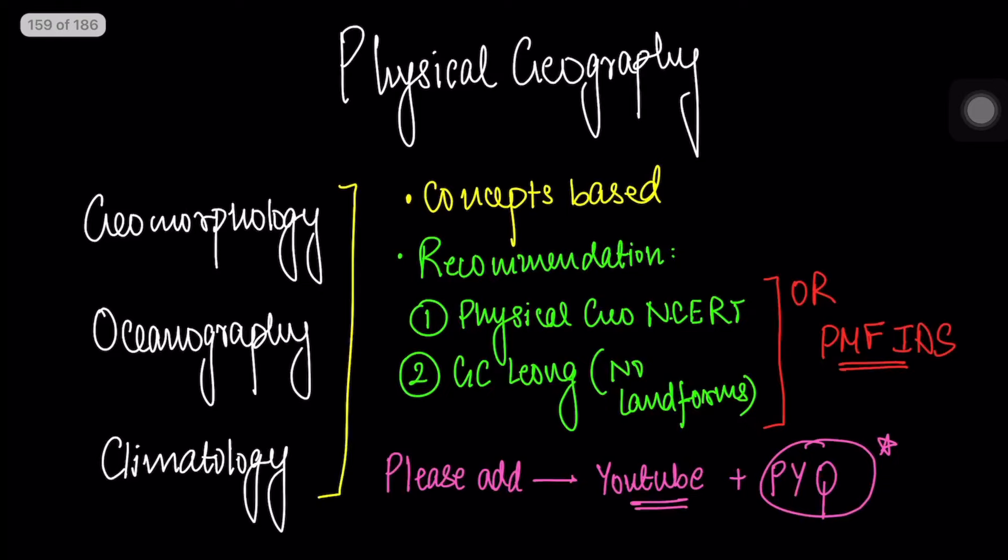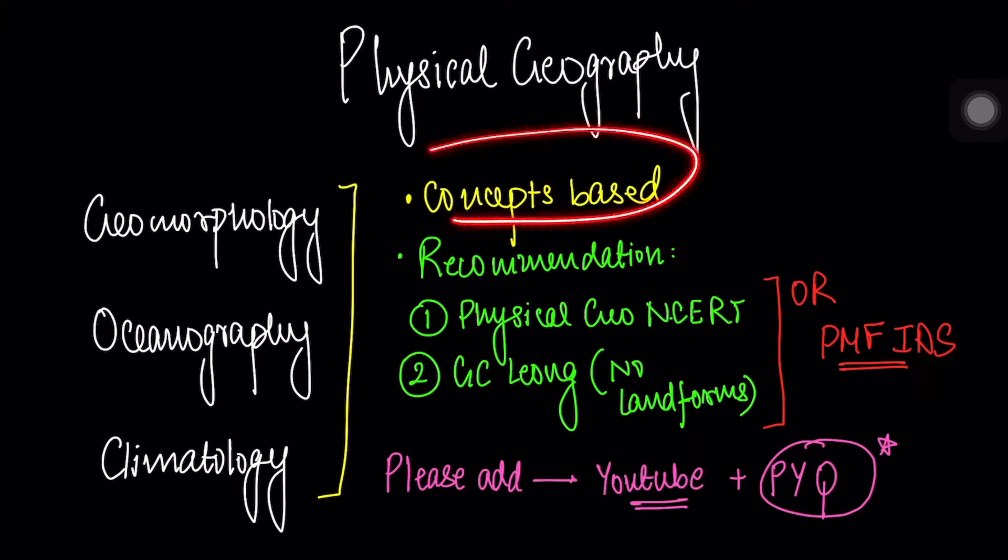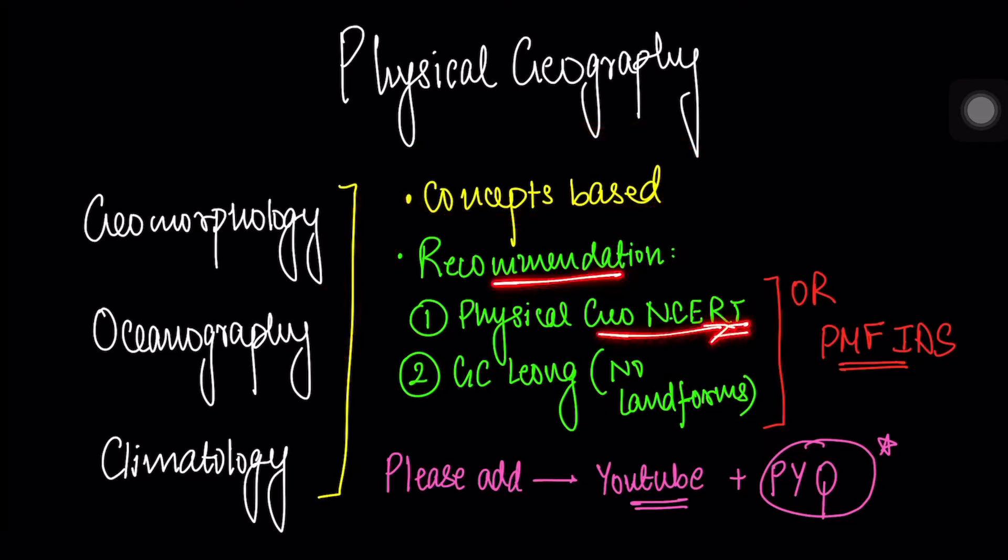Okay let's start with physical geography. Now physical geography has three main components: Geomorphology, Oceanography and Climatology. Now these are concept based topics. So if you know the concepts you can get all the questions right. So what is my recommendation? You go for the physical geography NCERT.